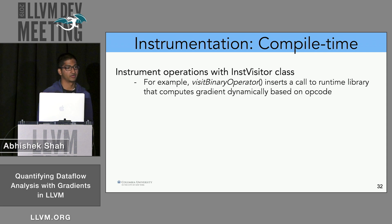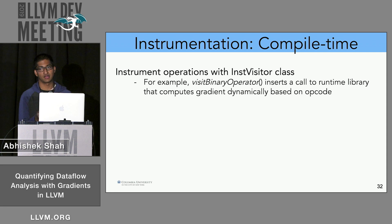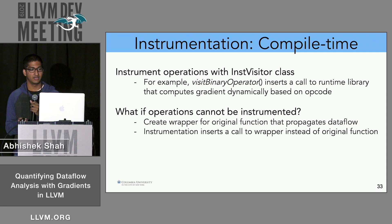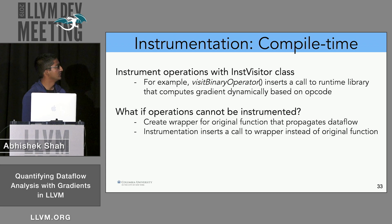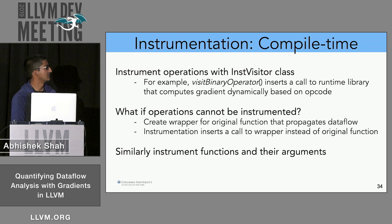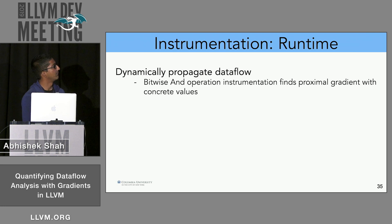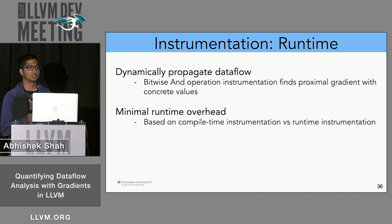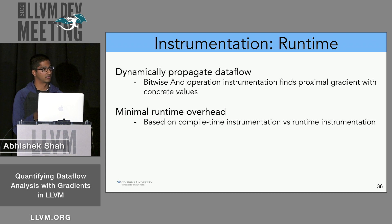To achieve this instrumentation, we instrument operations at compile time using the instruction visitor class. For example, the visit binary operator inserts a call to a runtime library, which computes the gradient dynamically once it has access to the raw values. For operations that cannot be instrumented — like memcpy, where you don't have source code access — we call wrappers around them that are responsible for propagating the gradients. This has minimal runtime overhead because all instrumentation is inserted at compile time, similar to address sanitizer.